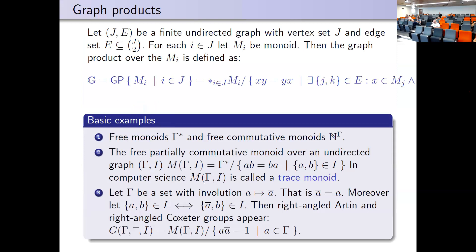Now part three: graph products. To prove something is useful you need examples. Free monoids and free commutative monoids are both examples of graph products — one is a free product, the other a direct product. Free partially commutative groups are graph products over an undirected graph Γ. The Γ_i provides the partial commutation: it's a mixture of no commutation and full commutation.